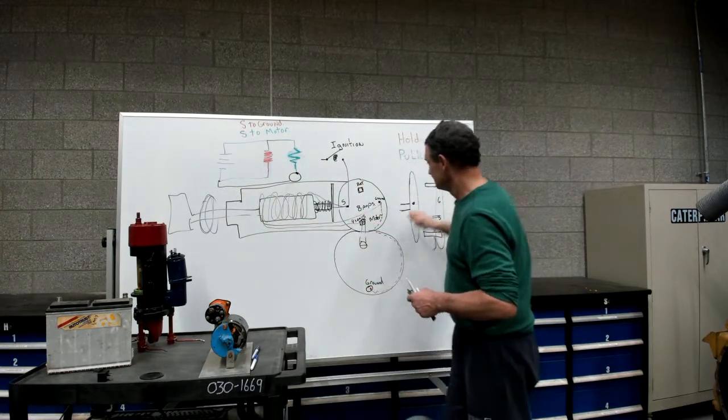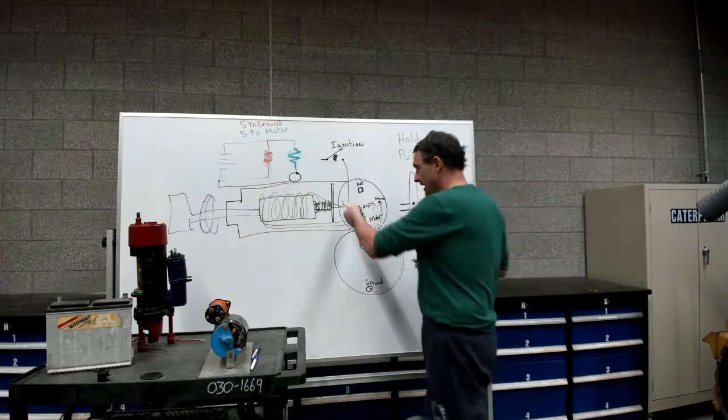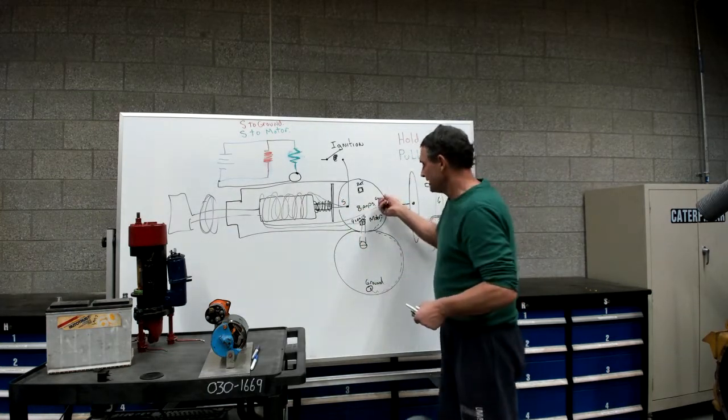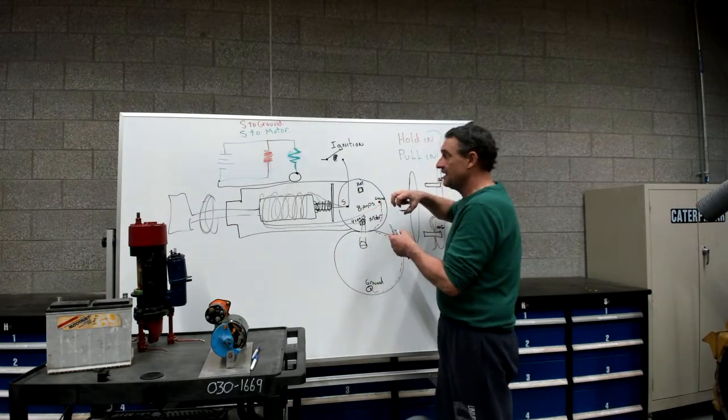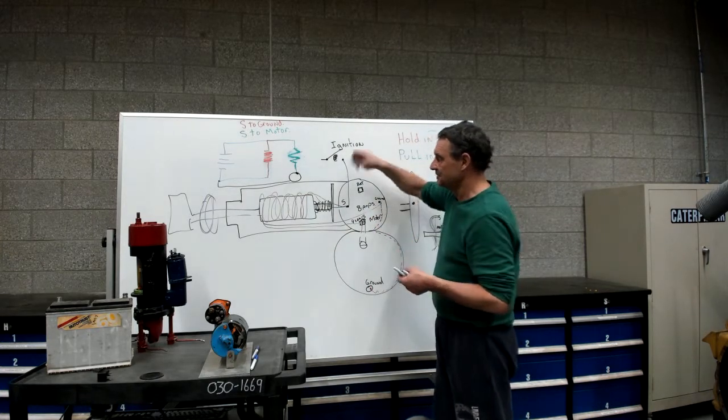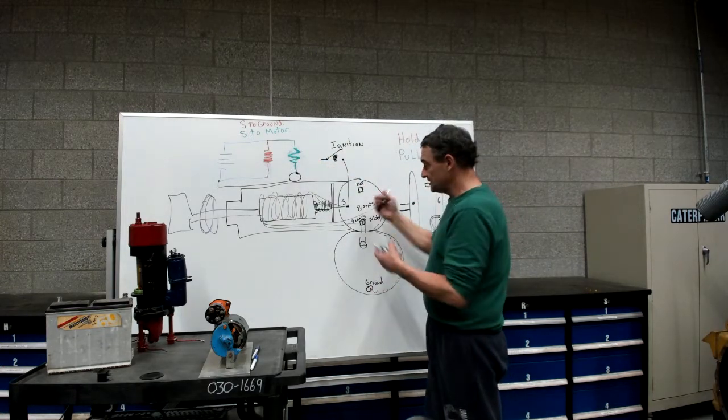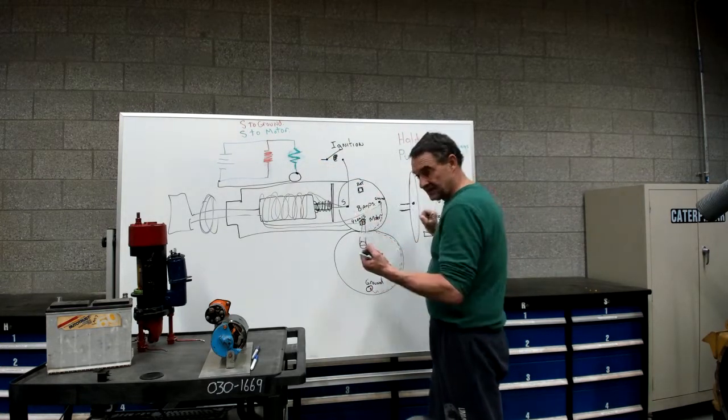S terminal to ground. So I'm basically going to take my battery, hook it to there, hook my ground to there. I'm going to put an ammeter in there. Now you don't want to hold it for more than 10 seconds because these holding windings are very small. You will see the 8 amps on the gauge, then shut it down.